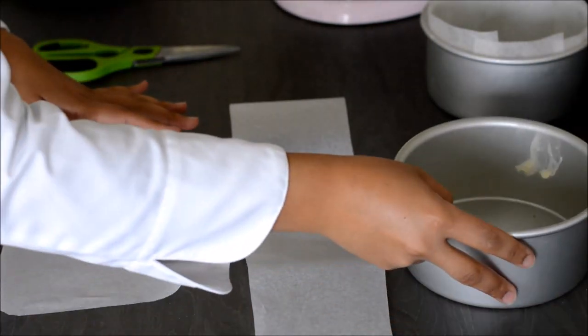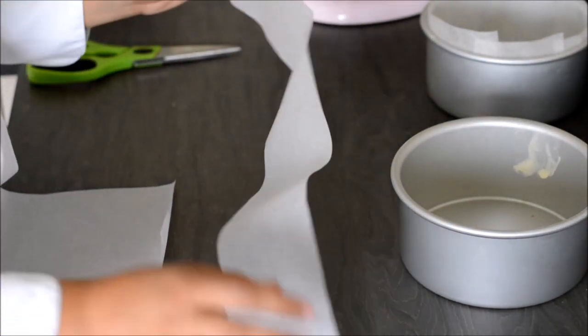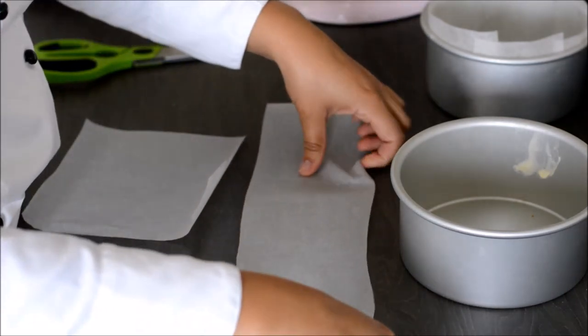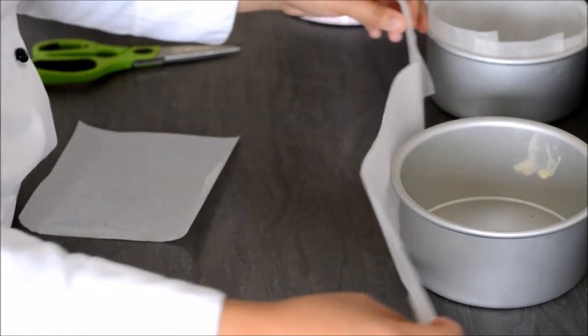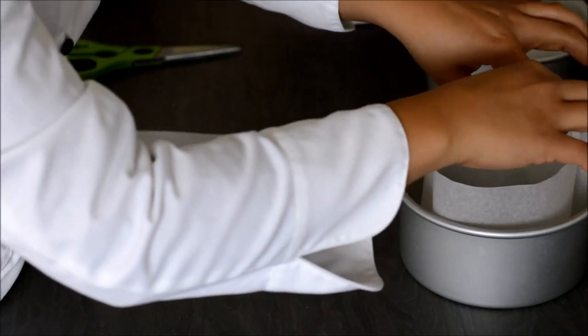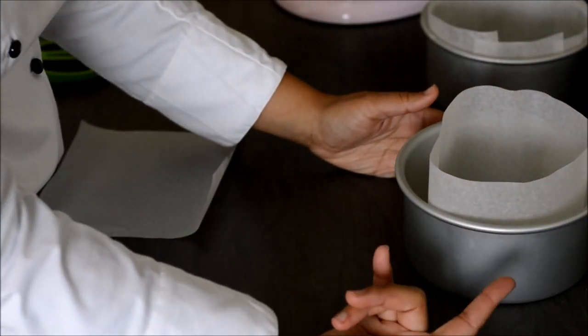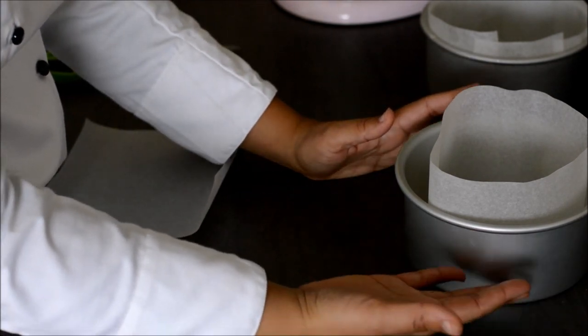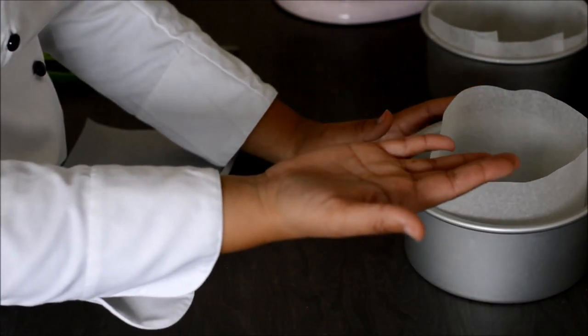So what I'm going to do, I've got my length of grease proof paper that I've cut here. This is for a six inch round and also it's about four inches tall. As long as it's just as tall as the tin that's fine because we're not going to overfill these tins with cake batter.